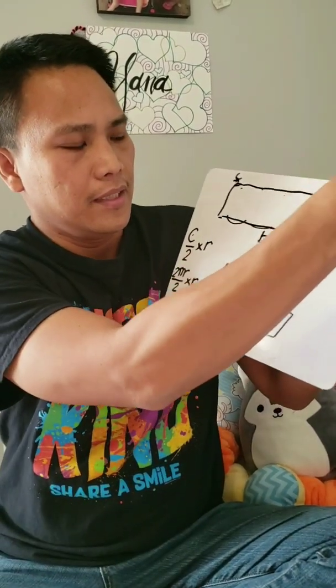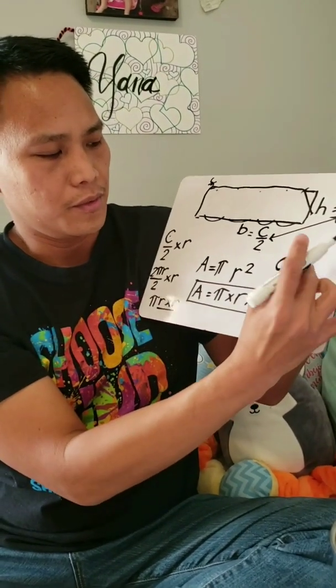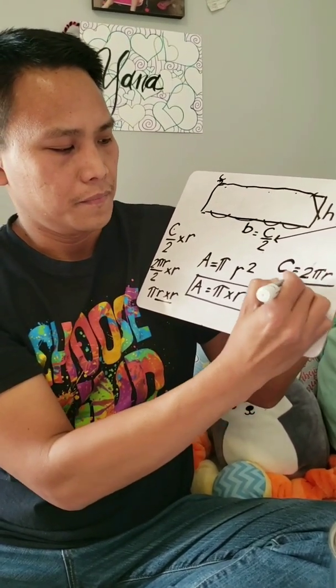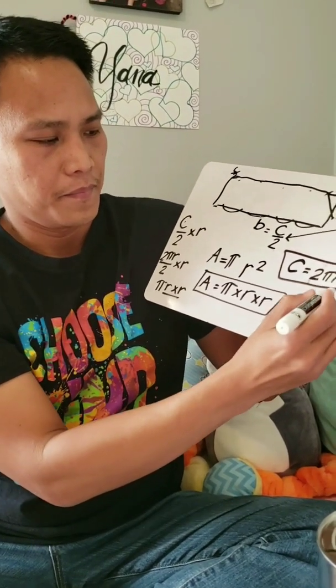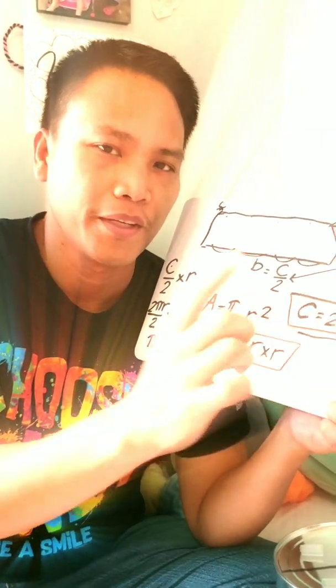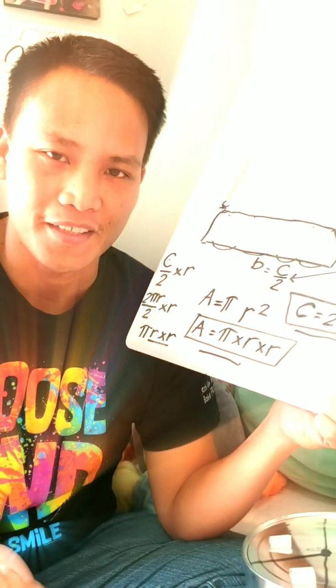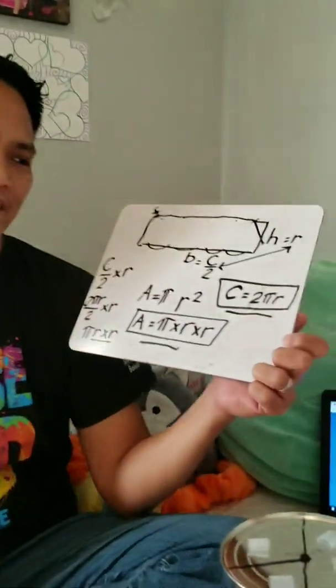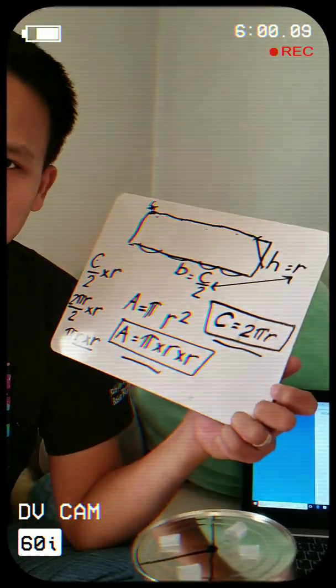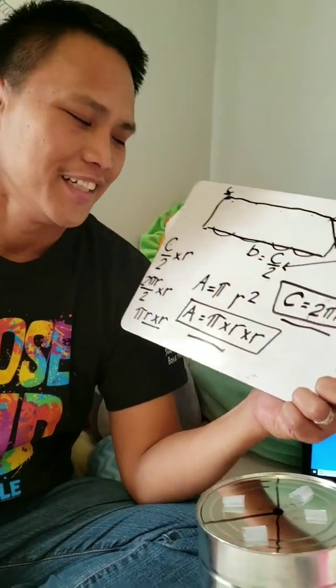So I'm gonna write back the formula for the circumference. Circumference of a circle is 2 times pi times diameter or 2 times pi times r. Now, I taught my students a rhyme. And there's a rhyme about a circle: twinkle twinkle little star, circumference is 2 pi r. How I wonder what you are, area is pi times r times r. Say it, Yana. Ready? One, two, three, go. Twinkle twinkle little star, circumference is 2 pi r. How I wonder what you are, area is pi times r times r. So always remember that.